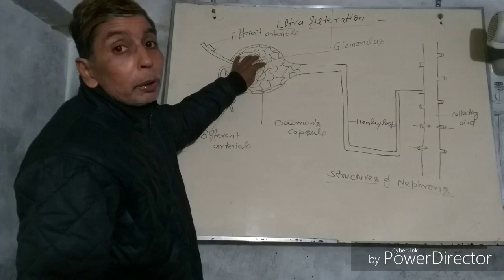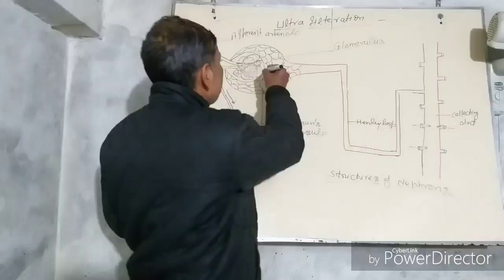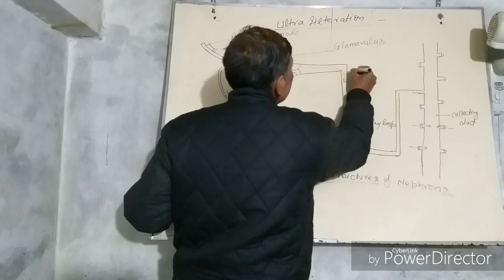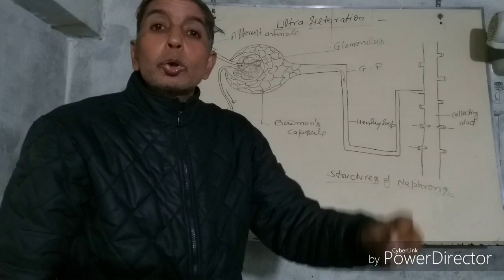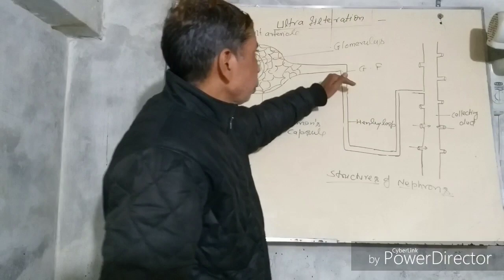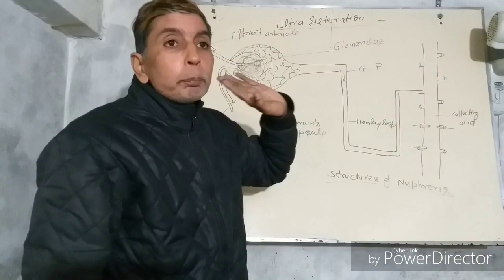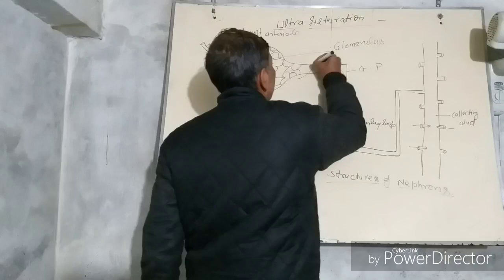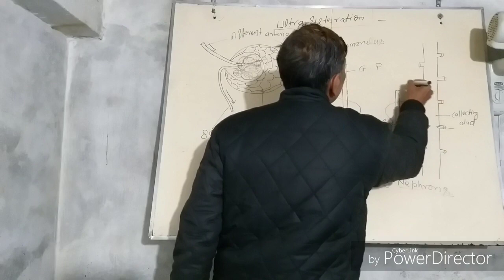When pressure increases in the glomerulus, something is filtered within this structure. These filtered substances enter the Bowman's capsule, then enter the Henle's loop — which makes a loop — then they open into the collecting duct. This is called the glomerular filtrate, or GF. The glomerular filtrate has useful substances also present in it, but these are again reabsorbed by the peritubular network.